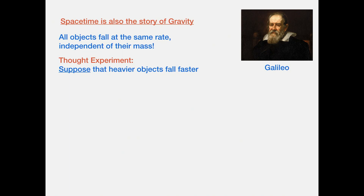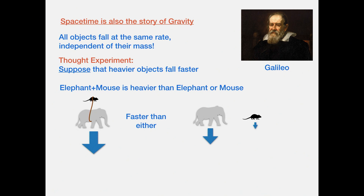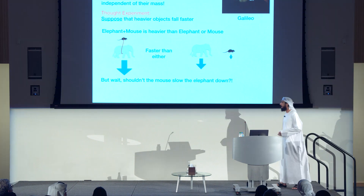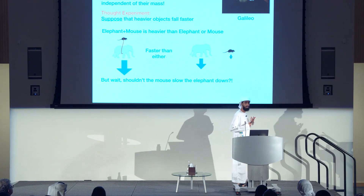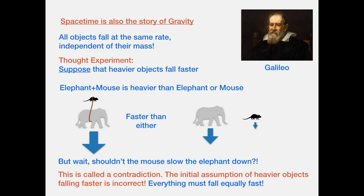He considered the following thought experiment. Suppose that heavier objects fall faster. Then consider an elephant and a mouse — the combination is obviously heavier than either alone, so the combination should fall faster. But then he said: shouldn't the mouse slow the elephant down? He started with an assumption and took it to its logical conclusion, finding a contradiction. Therefore, the initial assumption that heavier objects fall faster is incorrect — rather, everything must fall equally fast.